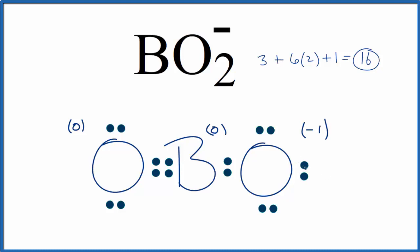We could try to do it this way and create two double bonds. But now what we find is that the boron in the center, this will have a formal charge of minus one. And then the two oxygens will be zero. So we'd rather have our formal charge, our negative formal charge, on the more electronegative element. So this is not the best Lewis structure for BO2 minus.